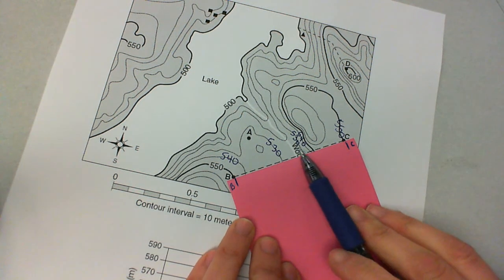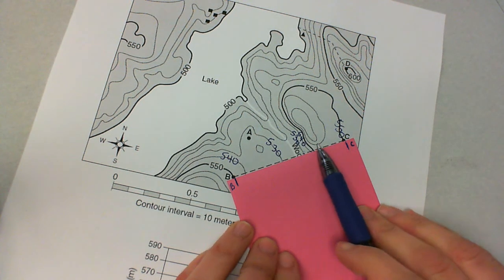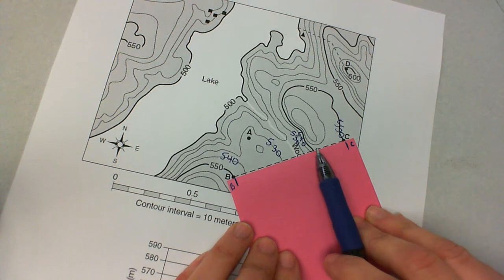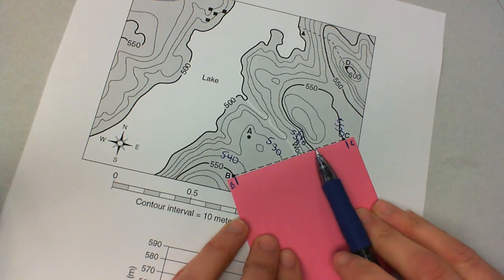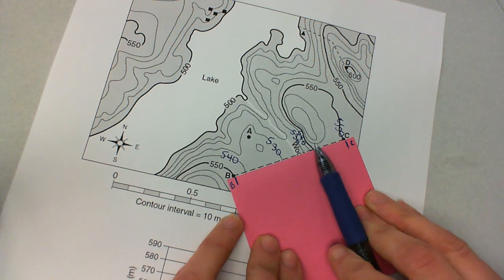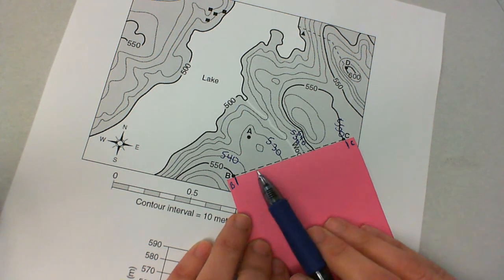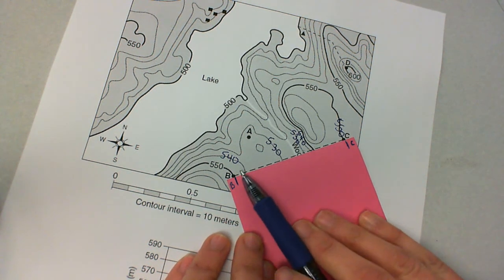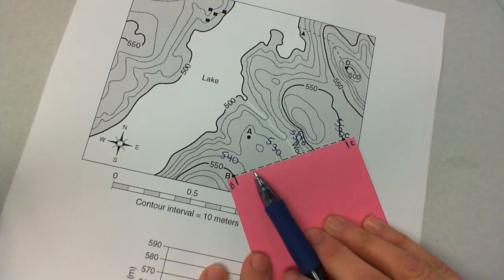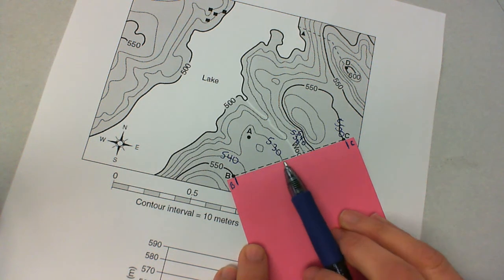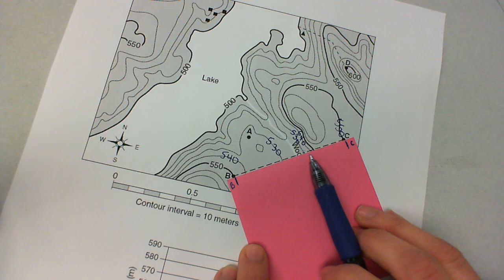As you know, contour lines, the spacing between them helps us figure out what the elevation is like, what the gradient is like. So if they're really close together, like they are here, that's telling us that it's probably going to be pretty steep. And then over here, the spacing is a lot farther, so it's going to be a little bit flatter. If you start changing where you're marking the contour lines on your scrap paper, you're going to change what the look of the profile would be.